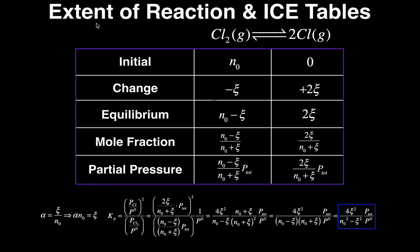So what is the extent of reaction? It is first of all given by this Greek letter xi — this little squiggly symbol. Really what it is, is it's just how much did the reaction go. If we have some equilibrium reaction, we're going to start off with some amount of the reactant — in this case we're going to call it N₀. We're going to lose some amount of that reactant because it's going to form the product. That amount of the reactant that we lose to form the product is called the extent of reaction, the Greek letter ξ.